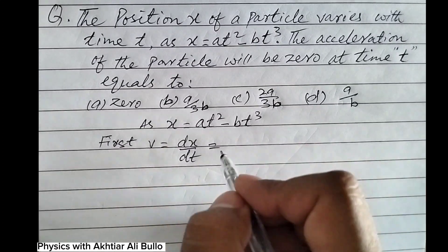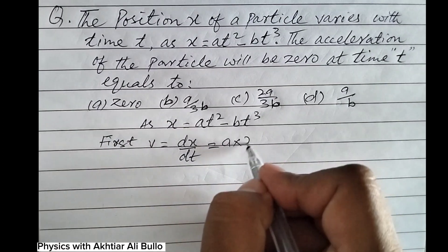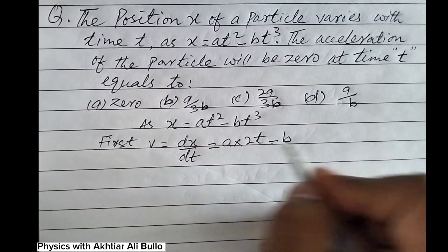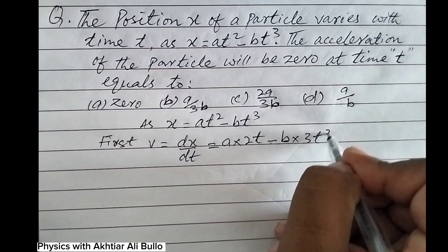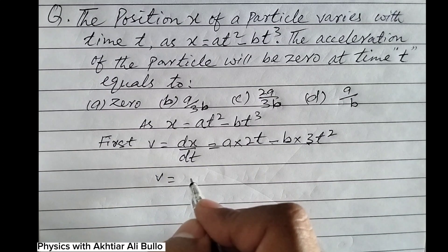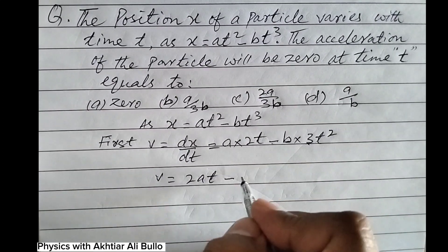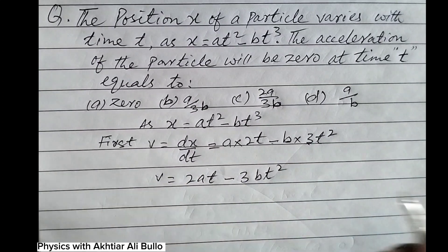The derivative of t² is 2t, and the derivative of t³ is 3t². So v = 2at - 3bt².